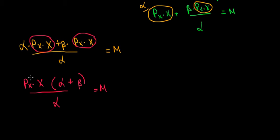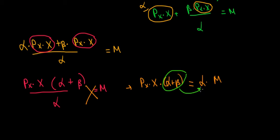Let's do a cross product. So we would have now px times x times alpha plus beta divided by alpha, we said the cross product, so equals to alpha times m. Now let's divide both sides by alpha plus beta. So let's take alpha plus beta on the other side so that we're left only with the money that we spent on x. Price of x times x equals to alpha divided by alpha plus beta multiplied with m.